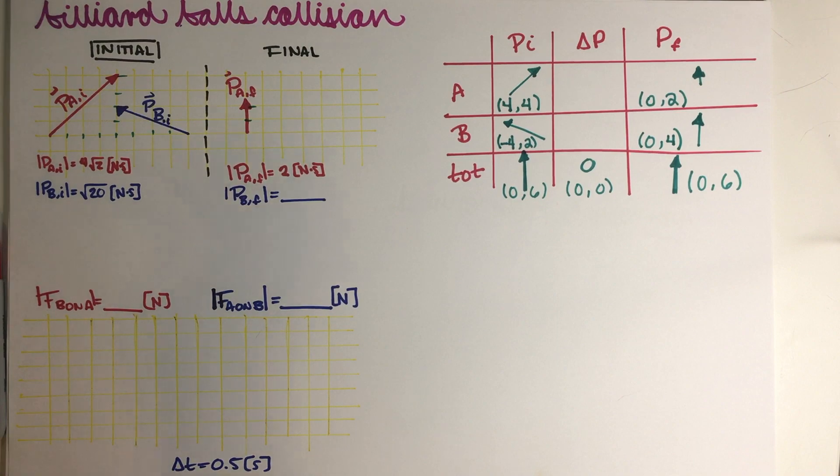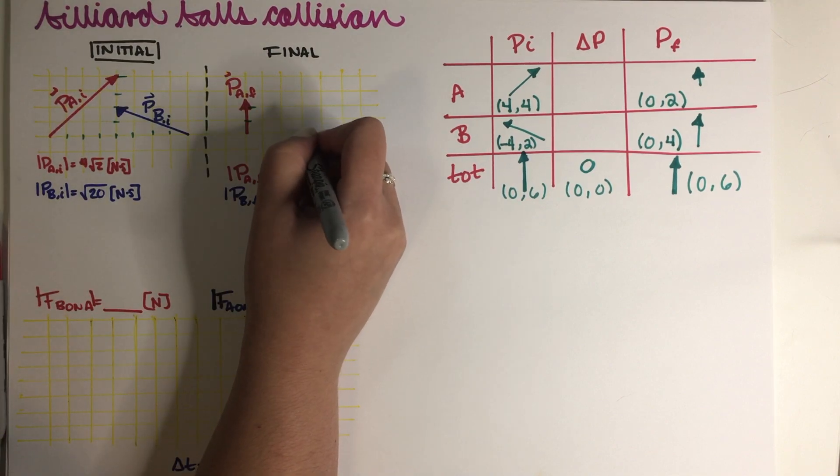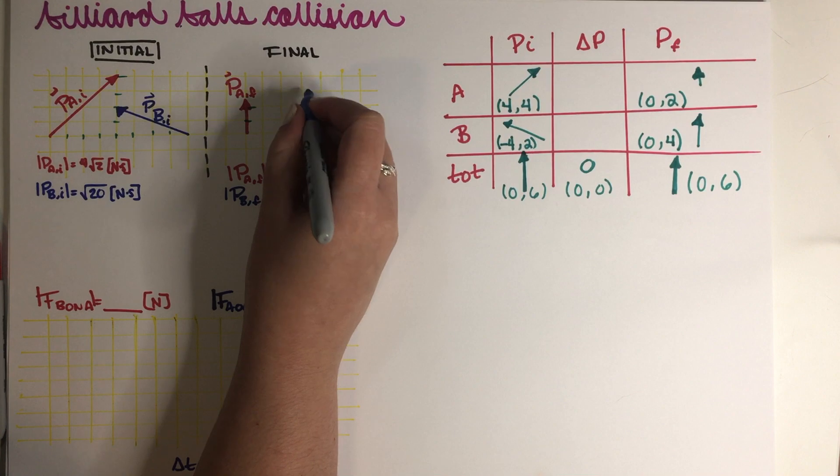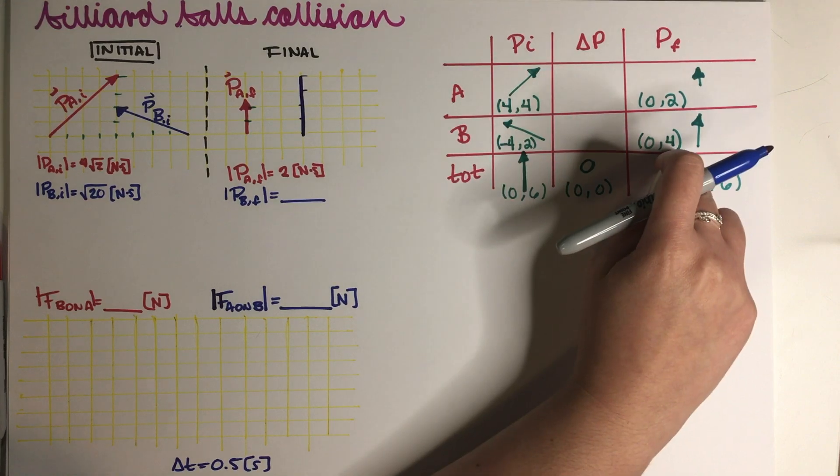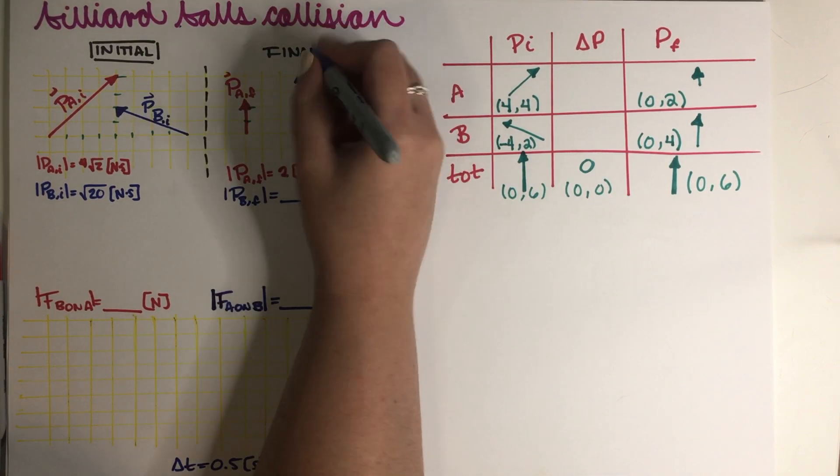So we just need to draw it. So we just need to start here and then just go 1, 2, 3, 4. So we just go 4. It's going up because it's positive. Like this.